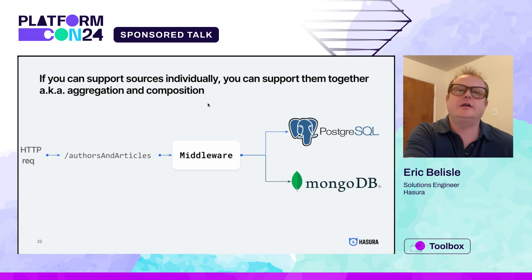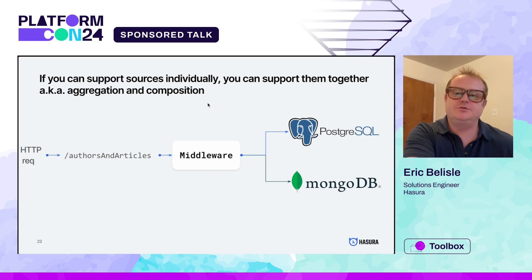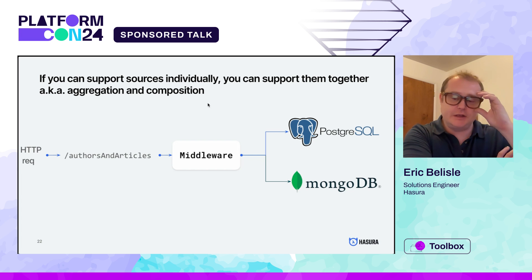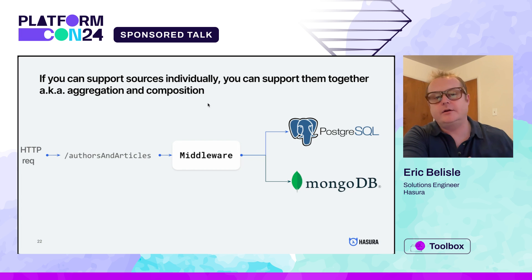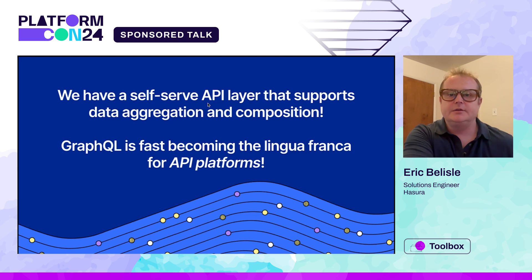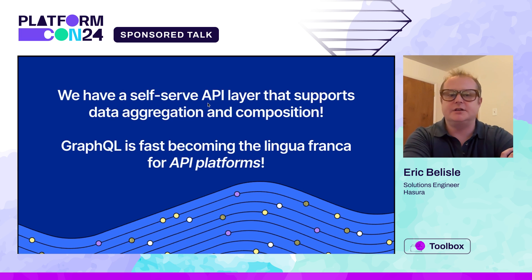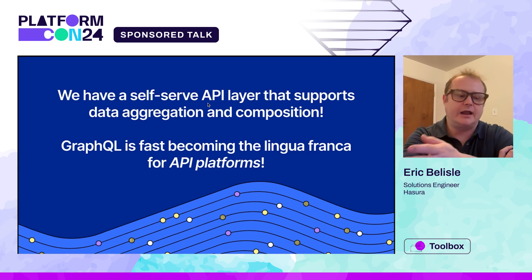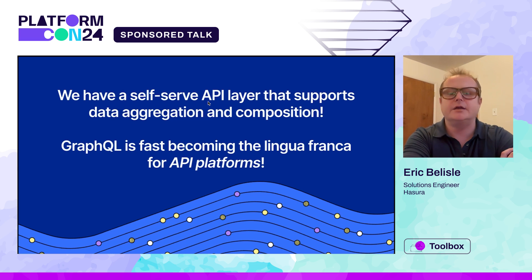Once we've got our SuperGraph layer implemented, we can actually change that authors and articles call down to a single HTTP request, have our middleware go reach out to one or several data sources to pull that information out, and return it to your client all in one single request. Now we've got a self-serve API layer that supports data aggregation and composition. Essentially, your users can come in, request exactly what they want, and not have to wait for a particular development team to build out an endpoint that queries the database in the exact way that particular client needs it.